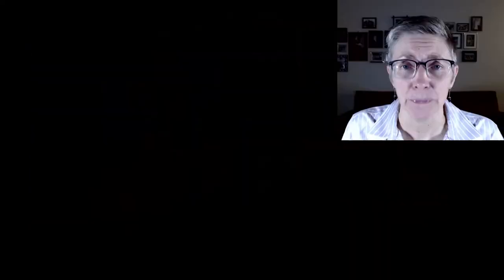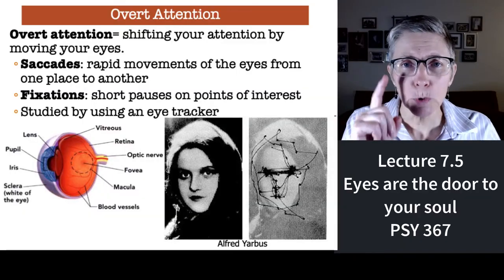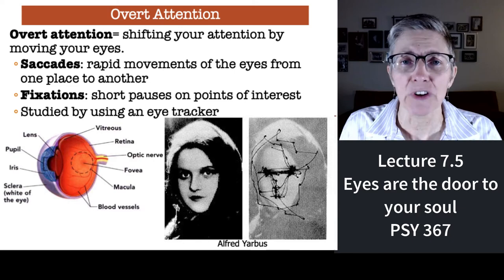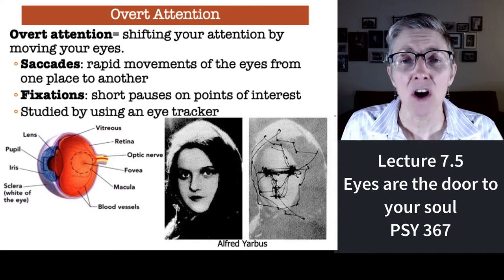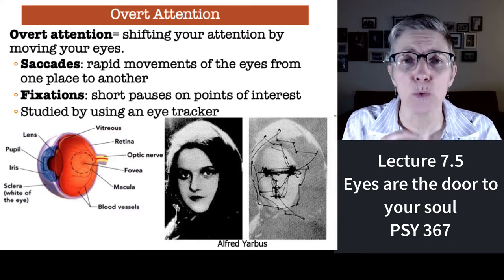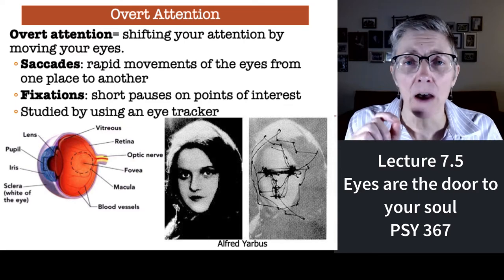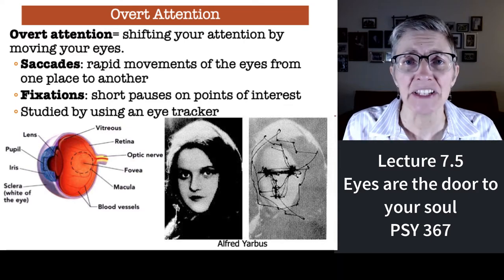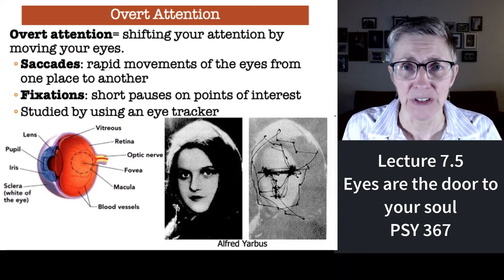So how does overt attention work? We need to go through some basic ideas about eye movements. When you look at something for an extended period of time, we call that a fixation. It's when your eyes pause on a point of particular interest.